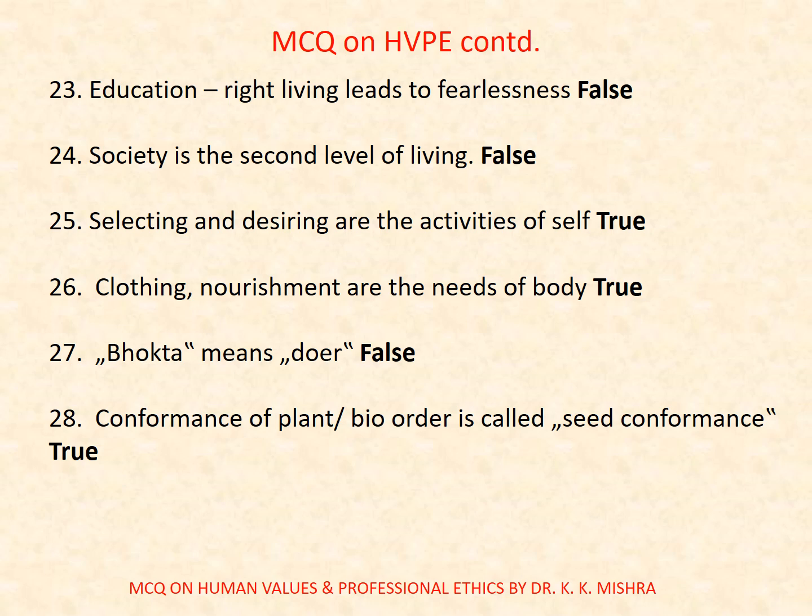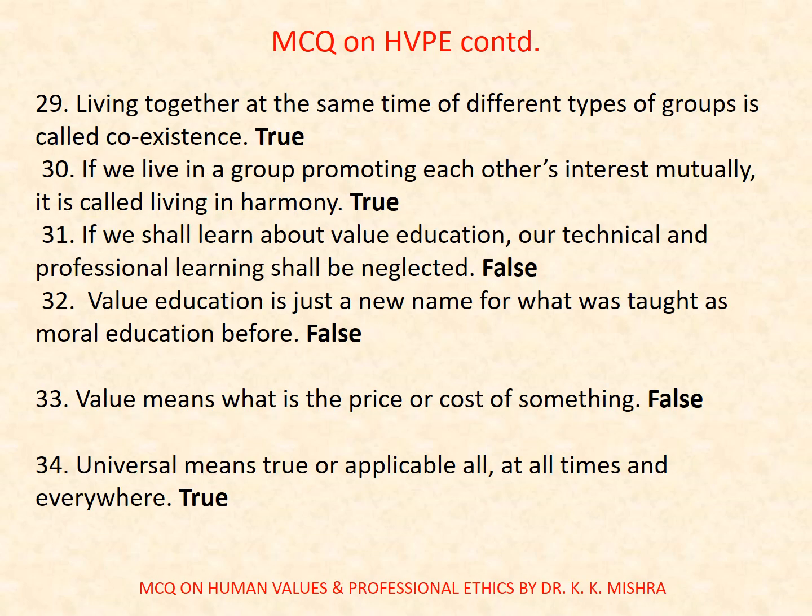Question number twenty-three: Education and right living leads to fearlessness. False. Question number twenty-four: Society is the second level of living. False. Question number twenty-five: Selecting and desiring are the activities of self. True. Question number twenty-six: Clothing and nourishment are the needs of body. True. Question number twenty-seven: Bhokta means doer. False. Question number twenty-eight: Conformance of plant bio-order is called seed conformance. True. Question number twenty-nine: Living together at the same time of different types of groups is called coexistence. True. Question number thirty: If we live in a group promoting each other's interest mutually, it is called living in harmony. True.